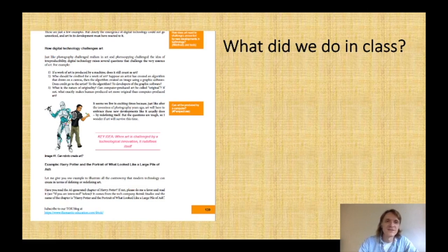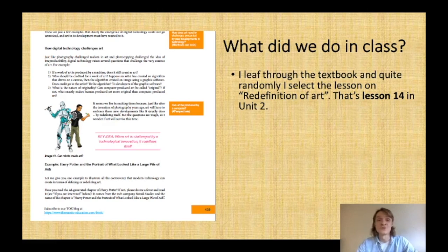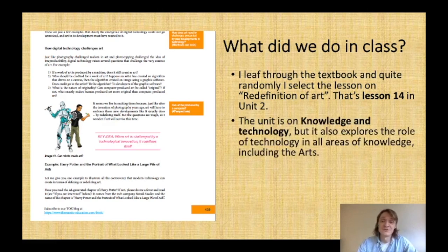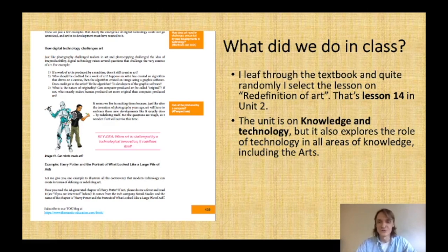What did we do in class? I leaf through the textbook and select a lesson entitled 'Redefinition of Art' — lesson 14 in Unit 2. The unit is on knowledge and technology, and since the textbook is built thematically, areas of knowledge are taught through themes rather than separately. This particular lesson is one exploring knowledge and technology in the arts, with a specific focus on digital art.